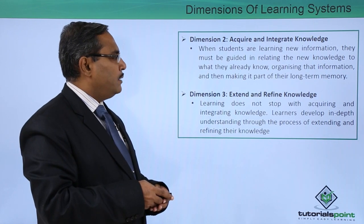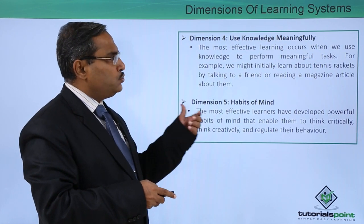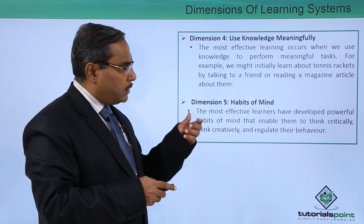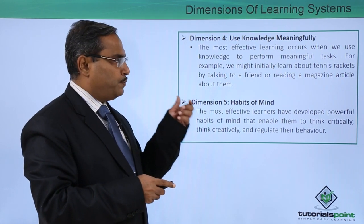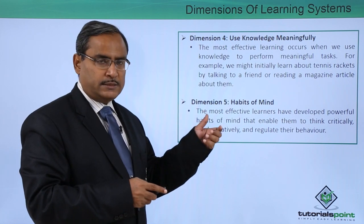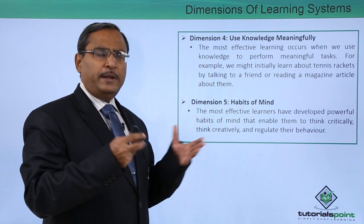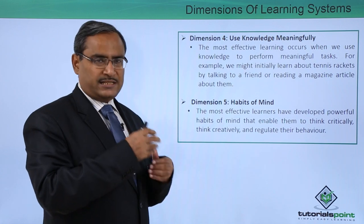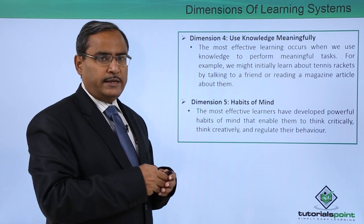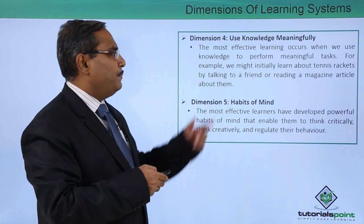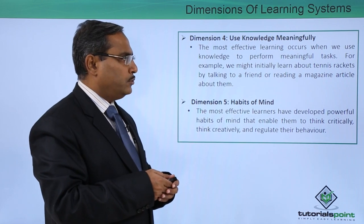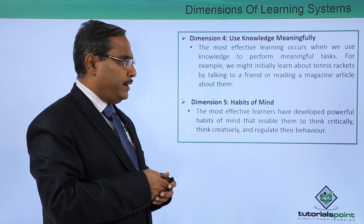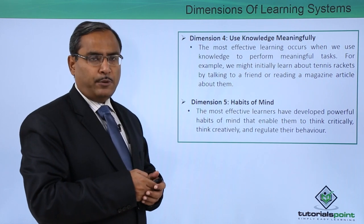Dimension number four is use knowledge meaningfully. The most effective learning occurs when we use knowledge to perform some meaningful task. We might have different knowledge, but which knowledge to apply to a task in a meaningful way is a great skill. For example, we might initially learn about tennis records by talking to a friend or reading a magazine article about them.